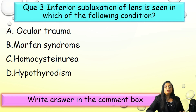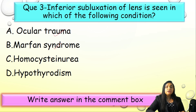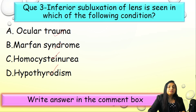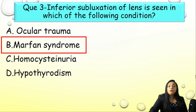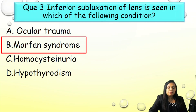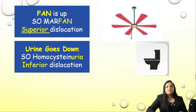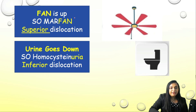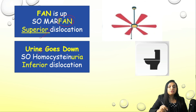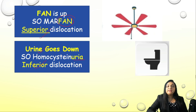Question 3: Inferior subluxation of the lens is seen in which condition — A) ocular trauma, B) Marfan syndrome, C) homocystinuria, or D) hypothyroidism? The correct answer is B, Marfan syndrome. Easy mnemonic: in Marfan, the 'fan' is always up — so lens dislocation is superior. In homocystinuria, 'urine always goes down' — so lens dislocation is inferior. Do not confuse the direction of lens subluxation between these two conditions.